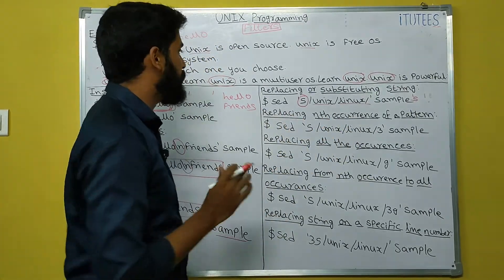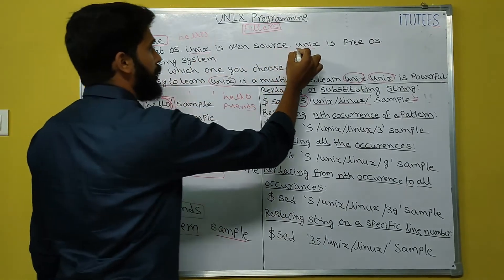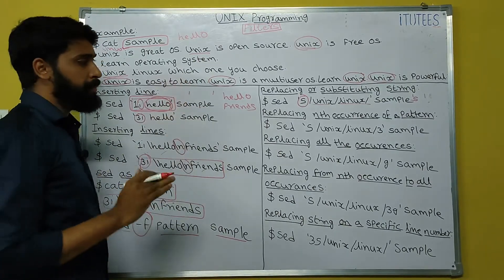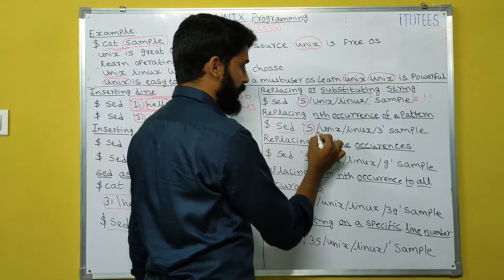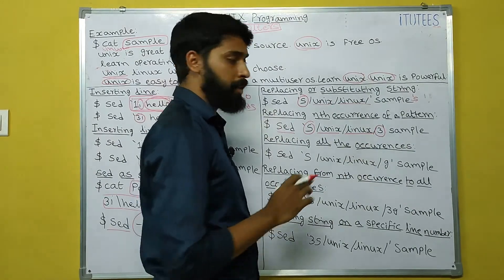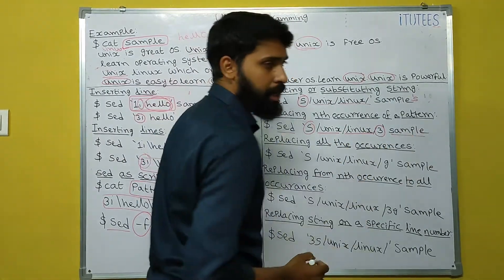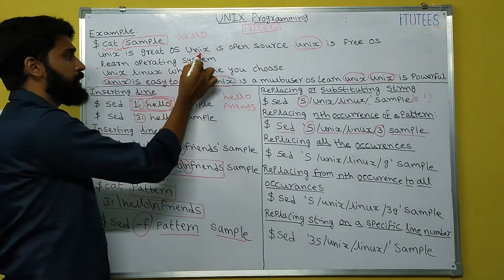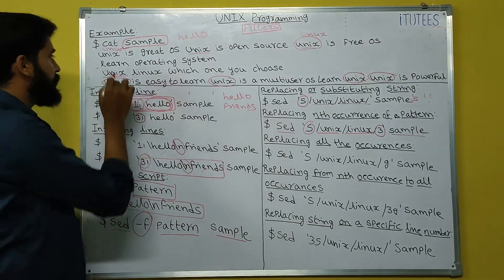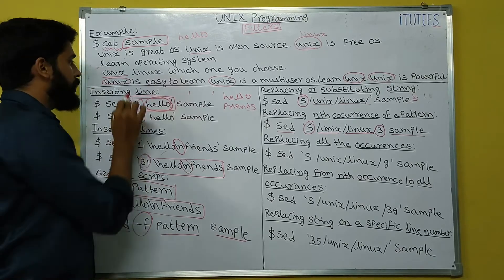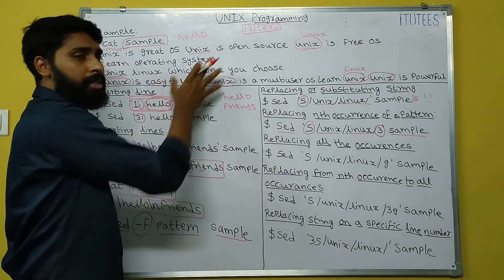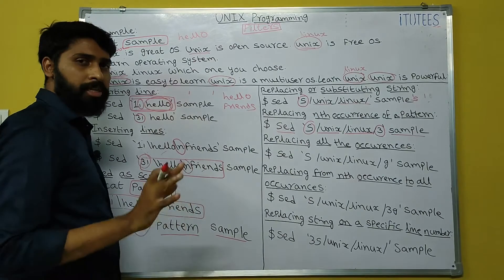Replacing the nth occurrence of a pattern: for example, to change only the third occurrence of unix to linux in each line, use: SED 's/unix/linux/3' sample. The first occurrence, second occurrence remain unchanged — only at the third occurrence is unix changed to linux. The actual file is not modified; results are displayed on standard output only.